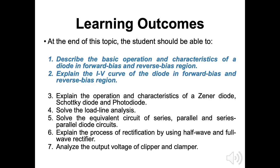Firstly, I will list down here the learning outcomes for Chapter 4. For today, there are two main outcomes to be achieved at the end of the lecture session. First, the student is able to describe the basic operation and characteristics of a diode in forward bias and reverse bias region. Second, all of you are able to explain the current and voltage curve of the diode in forward bias and reverse bias region. For today's lecture we will focus on these two outcomes. The rest will be covered in the coming lecture session.